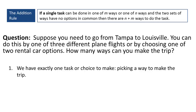First, remember what our question is: how many ways can we travel between these two cities? The question tells us that we have exactly one task or choice to make — picking a way to make the trip. That's the first part of the addition rule's definition, highlighted in bold at the top of the screen.